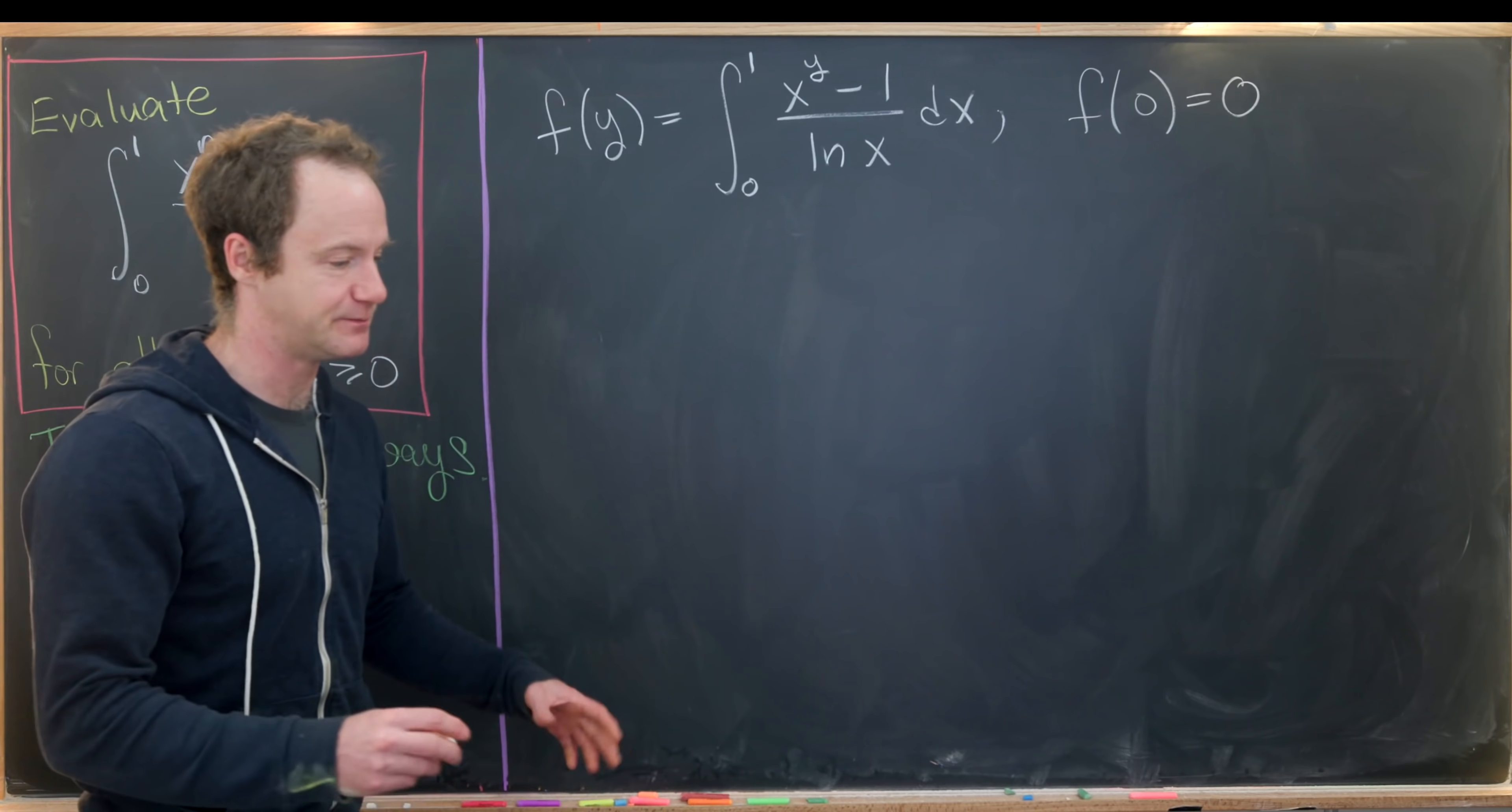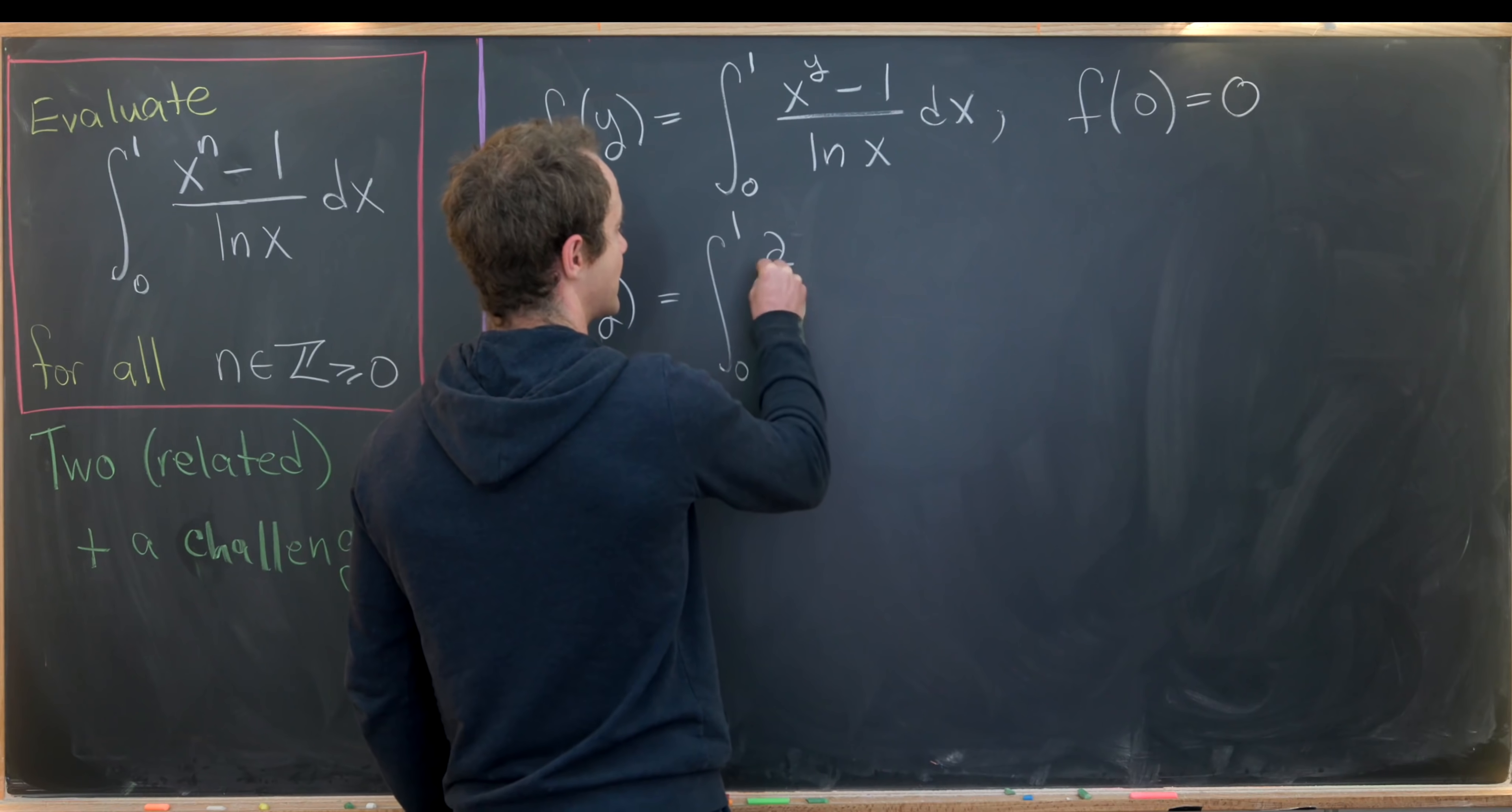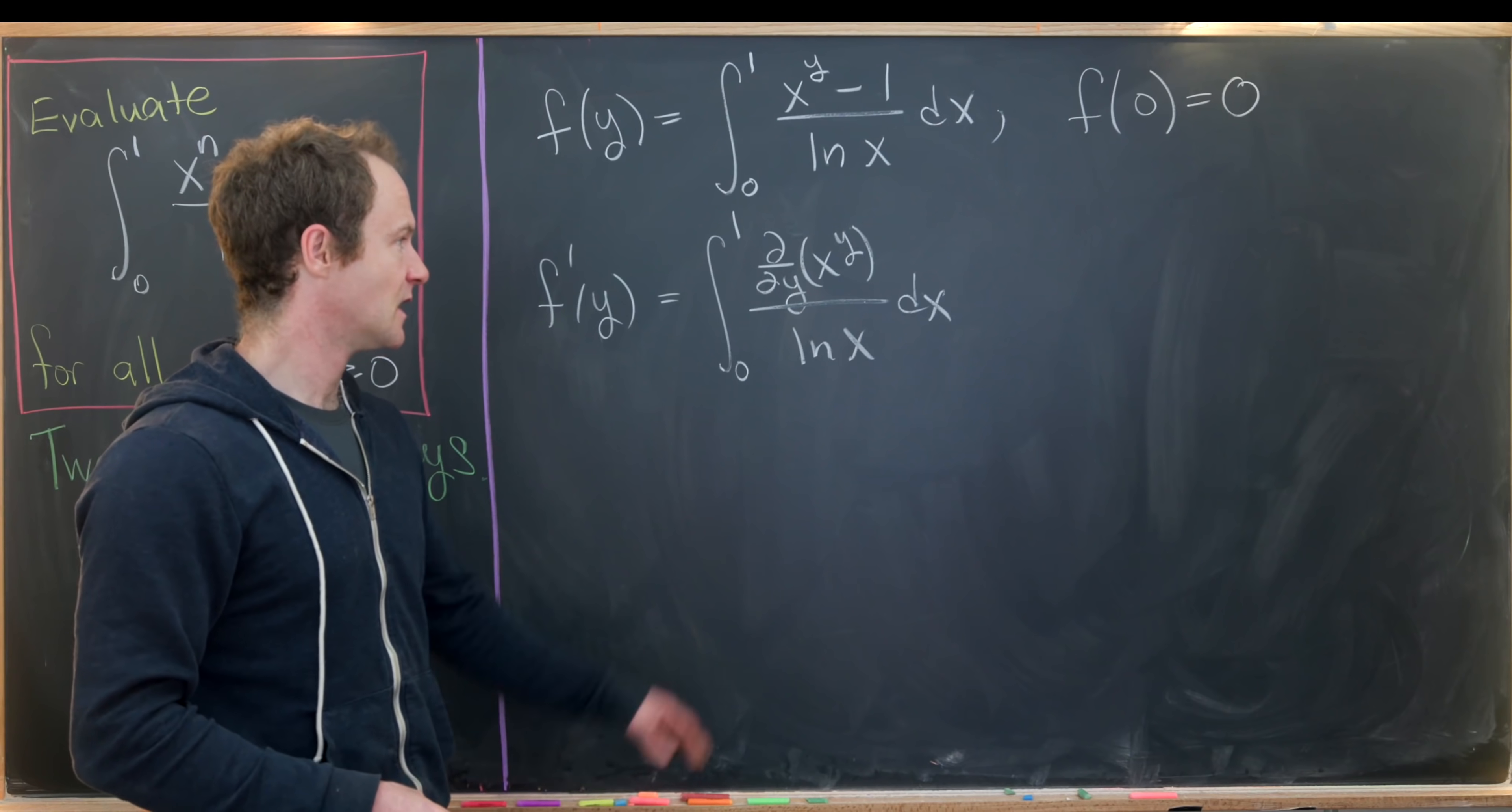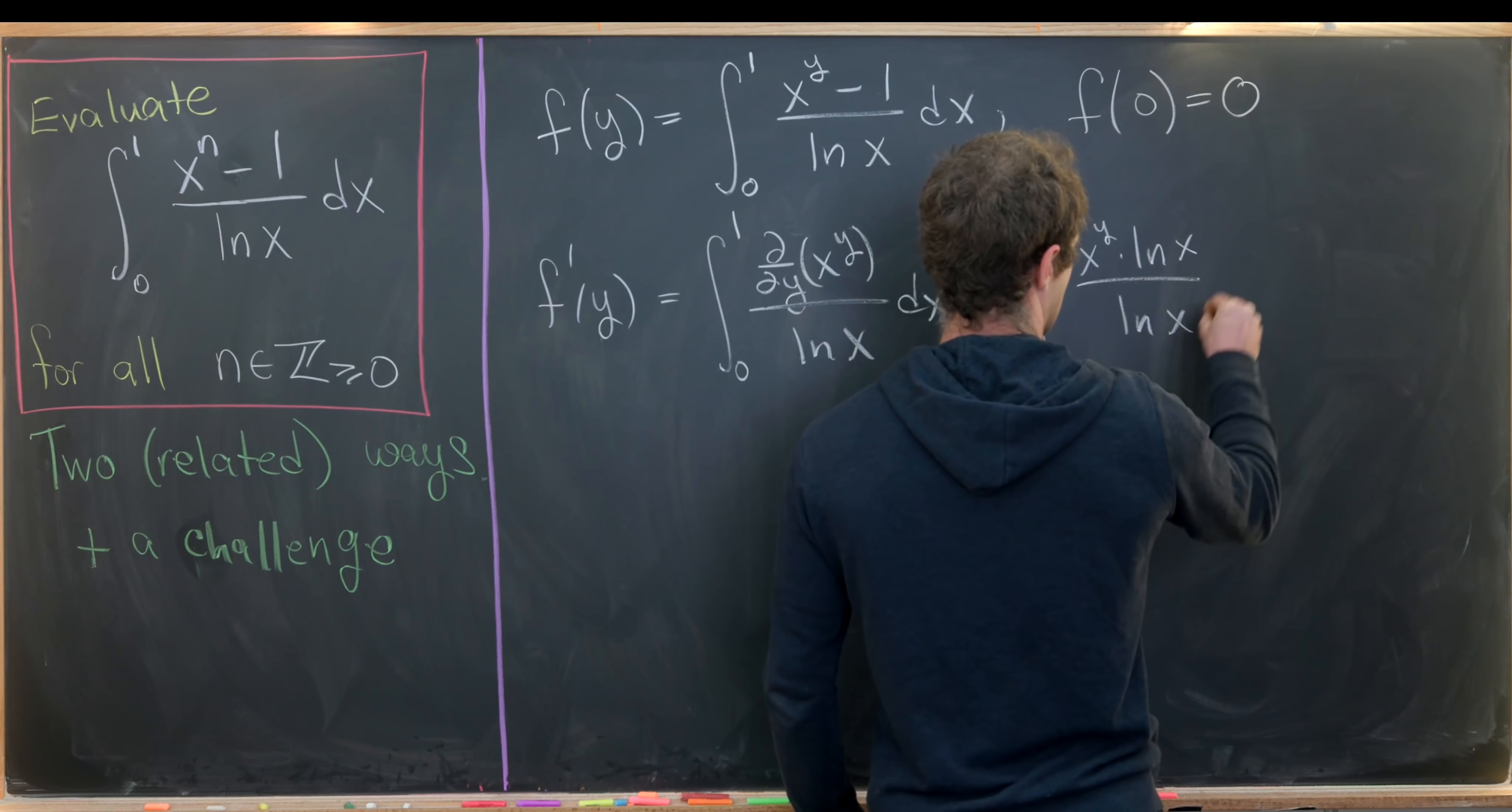So now let's take the derivative of this, building a differential equation for our goal function. So let's take the derivative with respect to y. I'll call that f prime of y. So that is going to be the integral from 0 to 1 of the derivative with respect to y of x to the y over the natural log of x. Keeping in mind that the derivative with respect to y of the number 1 is 0 because that's a constant. Now we're going to use standard derivative rules. Here this partial derivative views x as a constant. So we can rewrite this as x to the y times the natural log of x over the natural log of x.